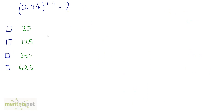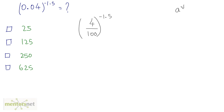Moving on to the second question. We can write 0.04 as 4 upon 100, raised to minus 1.5. If you have a number raised to a negative power, it equals 1 upon that number raised to that power. So, this can be written by inverting the numerator and denominator: 100 upon 4, raised to 1.5.